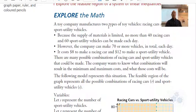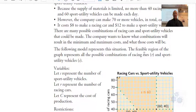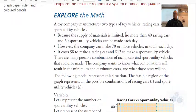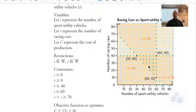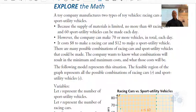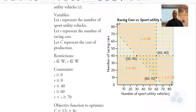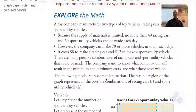A toy company manufactures two types of toy vehicles: racing cars and sport utility vehicles. Because the supply of materials is limited, no more than 40 race cars and 60 sport utility vehicles may be made each day. This line right here would set a limit for the number of racing cars at 40. Everything below is shaded. Also, we have 60 SUVs that could be made, so there's a vertical line at 60 with everything to the left shaded.